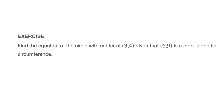Let's see how to find the equation of a circle given the coordinates of its center as well as a point through which it passes. We're going to work through an exercise: find the equation of the circle with center at the point with coordinates 3, 4, given that the point with coordinates 6 and 9 is a point along its circumference.